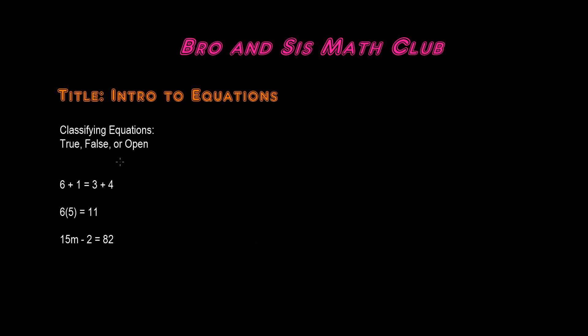The first equation is 6 plus 1 is equal to 3 plus 4. 6 plus 1 is equal to 7, and 3 plus 4 is also equal to 7. That means 7 is equal to 7, and therefore this equation is a true equation.